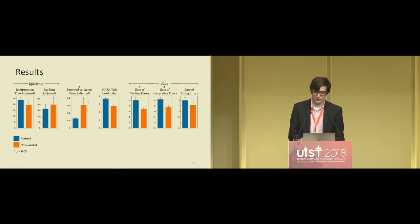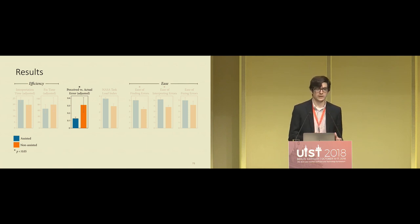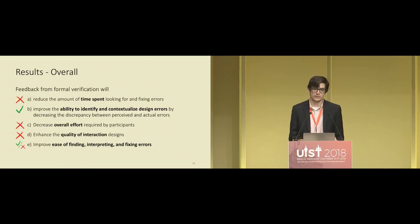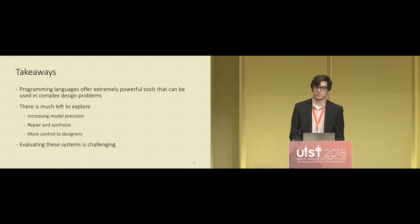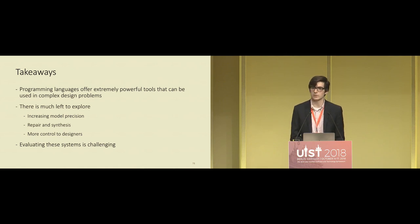Our results showed that people in the assisted condition had a significantly smaller discrepancy between the errors they perceived to be in their designs and the errors that were actually there. Assisted participants also found it easier to find and interpret errors. Overall, Hypothesis B was supported and Hypothesis E was partially supported. We've shown that we can tell designers in real time when their designs violate social norms and which norms they're violating — which is significant, because not everyone is a behavioral expert, and reasoning about these norms is challenging.